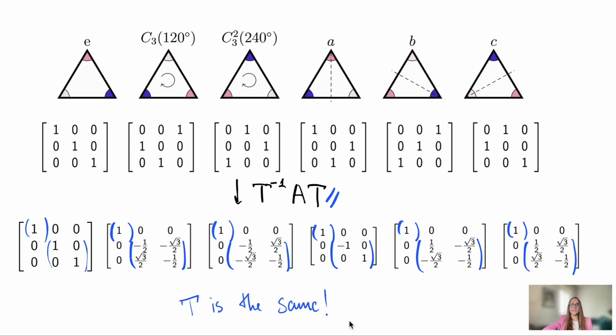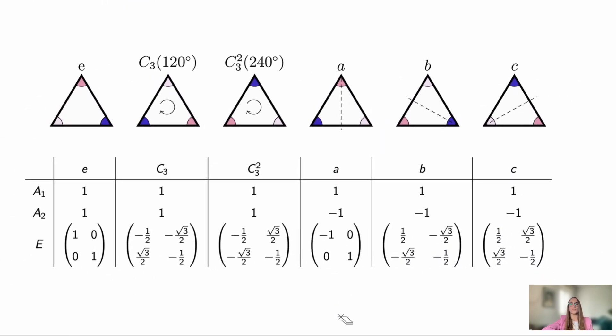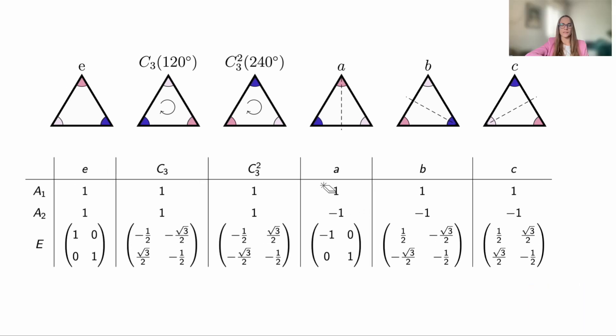For the triangle symmetry group, it turns out that any representation, meaning any set of matrices that satisfies the group multiplication rules, can be brought into such a block diagonal form by an appropriate change of basis. For triangles, there are only three types of minimal blocks that can appear this way, and we have already seen them earlier. These minimal blocks are called irreducible representations of the group. And the permutation representation we have seen above was, of course, reducible.